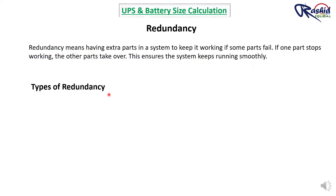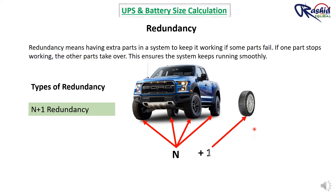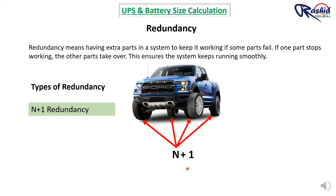The first is N+1 redundancy, a concept used to ensure system reliability and availability. Using the car tire analogy: a car normally uses 4 tires — these represent N, the minimum components needed for normal operation. The +1 is an additional spare component not in use under normal conditions. If one of the 4 working tires gets punctured, the spare tire (the +1) replaces it, allowing the car to continue operating.